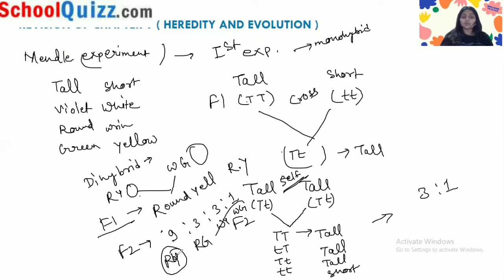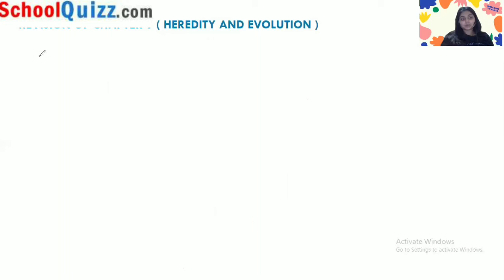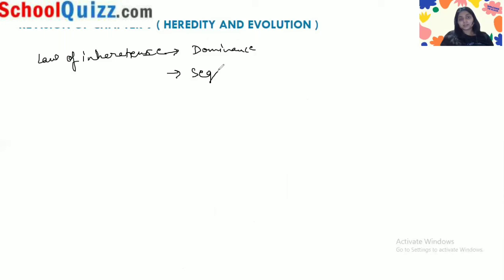Based on these experiments, Mendel proposed the Laws of Inheritance: the Law of Dominance, the Law of Segregation, and the Law of Independent Assortment.